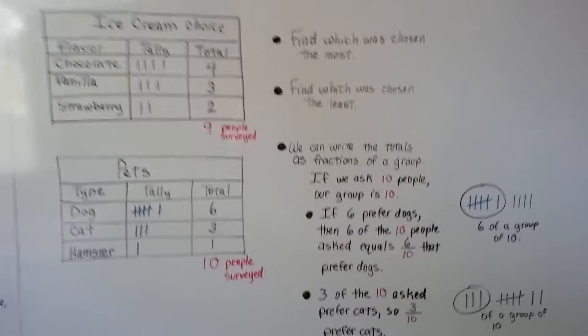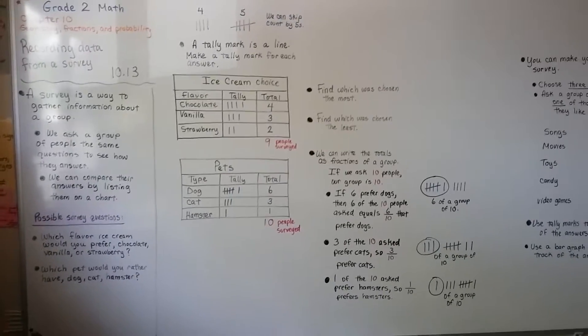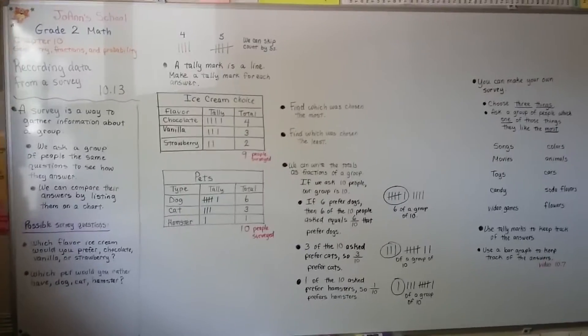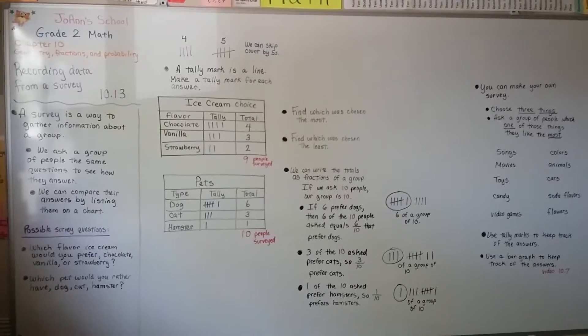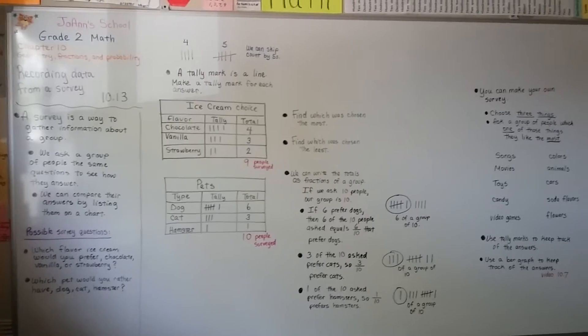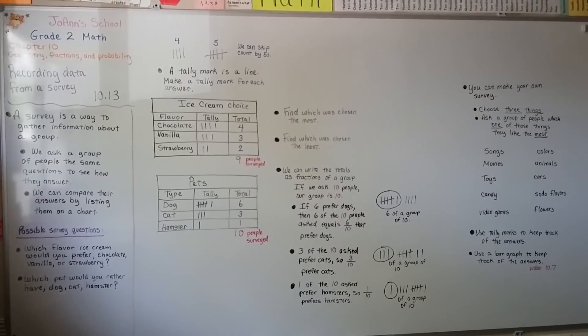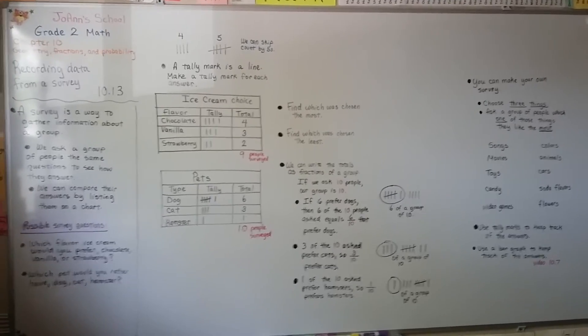That is recording data from a survey. Data is information. We can use tally marks to keep track of it. And we can write a fraction of a group with our answers, our information, our data that we collected. Try making your own survey. You can survey your friends or your family. I'll see you next video. Bye!